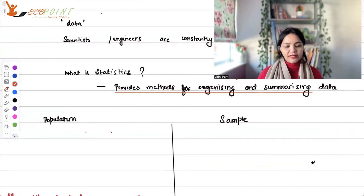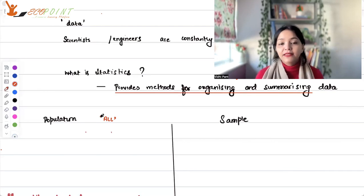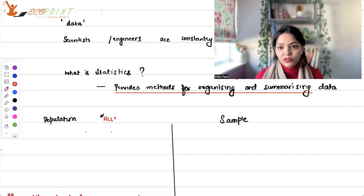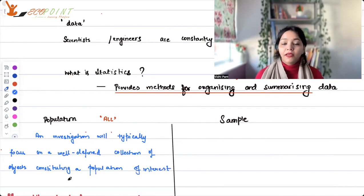Population by the name of it feels like we're talking about population of a country, right? It feels like we're talking about people, not necessarily. Population simply means when we use the word population in statistics, we are taking all into consideration. Suppose I want to collect data on individuals who are graduating in economics in the current academic year.